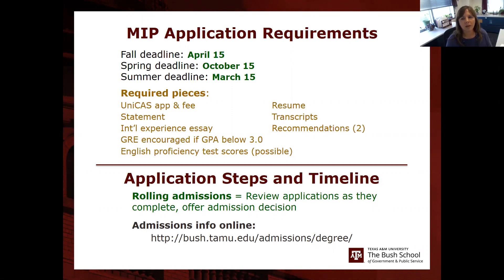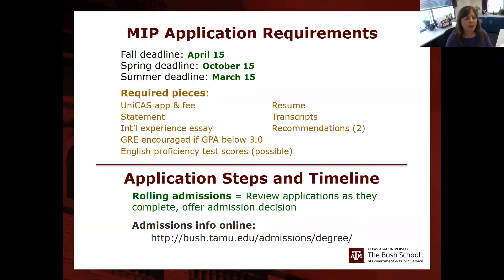Applicants from countries where English is not the native language must submit English proficiency scores. This is a rolling admissions program — Ashley works one-on-one with applicants to get materials complete and in front of faculty as quickly as possible for a timely decision. It's less involved than the MIA process. Expected enrollment is roughly eight to fifteen in the fall, fewer than half that in the spring, and a handful in the summer.